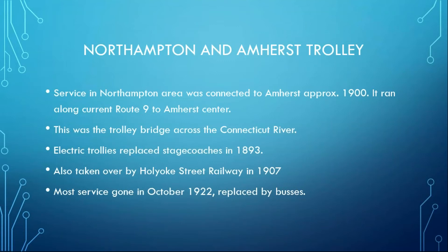The Northampton and Amherst trolley — another branch. Service in the Northampton area was connected to Amherst about 1900, running right along Route 9 into Amherst Center. We saw that trolley bridge a moment ago in the three-bridges shot. The electric trolleys replaced stagecoaches about 1893, depending on the stagecoach line. The Holyoke Street Railway gobbled up all these little companies, buying up all of this stuff in 1907. Most of that service was gone by October 1922, replaced by buses.